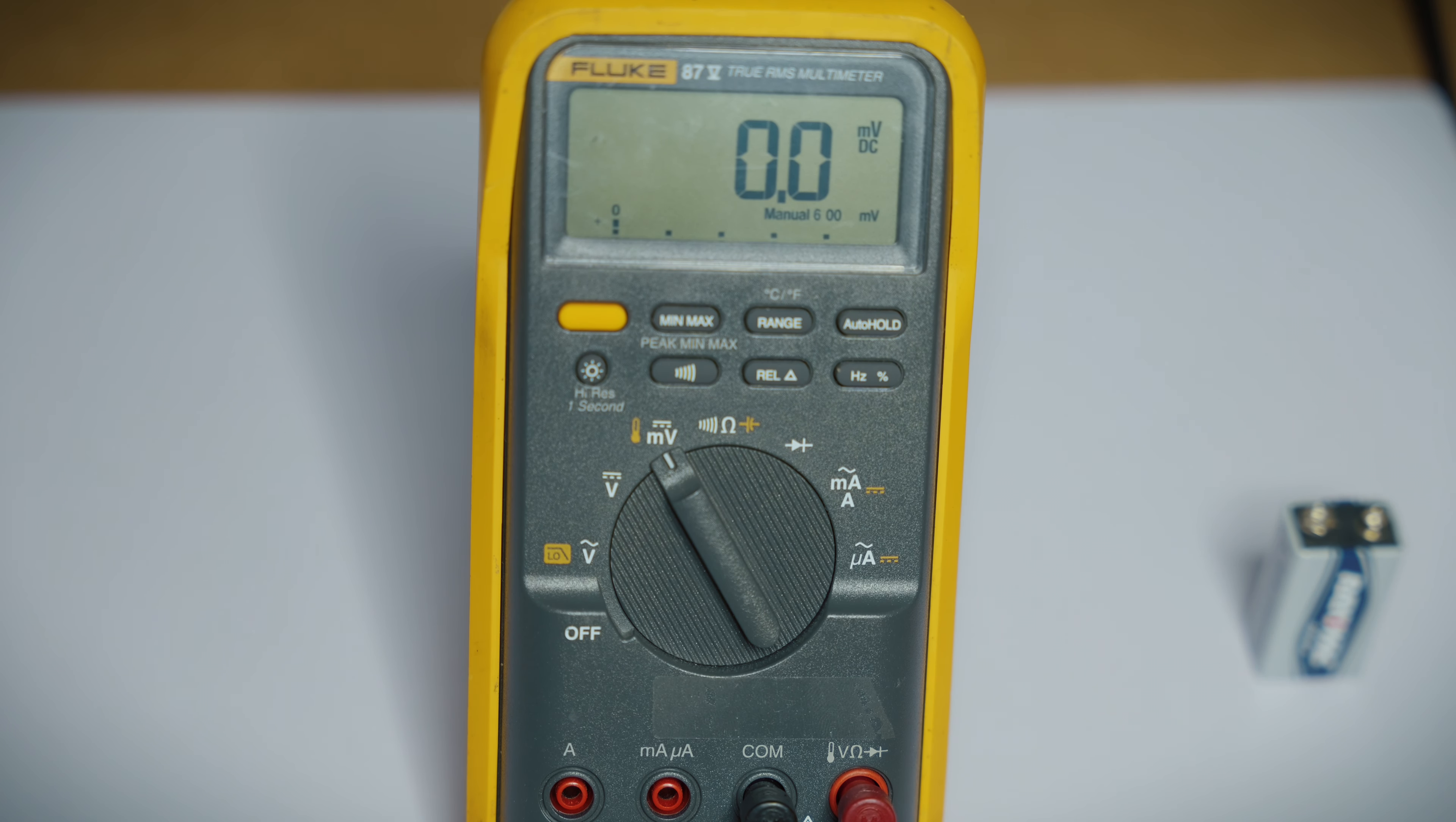Now we've come to the resistance and continuity setting. So first we'll use the resistance setting. Now the resistance in electricity is the resistance of current flow in the circuit. So we use this to measure how much resistance is on a circuit, or you can also use it to test out individual resistors.